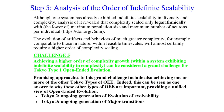Although one system has already exhibited indefinite scalability in diversity and complexity, analysis revealed that complexity scaled only logarithmically with the lower of maximum population size and maximum number of neurons per individual. The evolution of artefacts and behaviours of much greater complexity — for example, comparable to those in nature — within feasible timescales will almost certainly require a higher order of complexity scaling. That leads to our fifth challenge: achieving a higher order of complexity growth within a system exhibiting indefinite scalability in complexity. This can be considered a grand challenge for Tokyo Type 1 open-ended evolution. Promising approaches include achieving one or more of the other Tokyo types of open-ended evolution, and this can be seen as one answer to why those other types are important — providing a unified view of open-ended evolution.